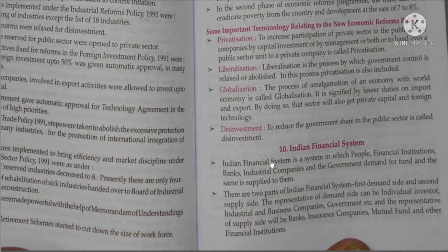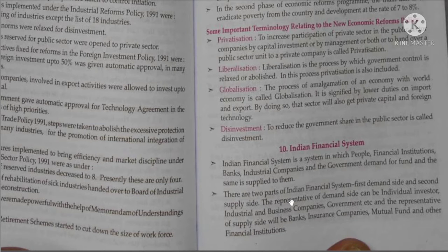The Indian Financial System is a system in which people, financial institutions, banks, industrial companies and the government demand for funds, and the same is supplied to them. There are two parts: first, the demand side, and second, the supply side. Representatives of the demand side include individual investors, industrial and business companies, and the government. Representatives of the supply side include banks, insurance companies, mutual funds and other financial institutions.